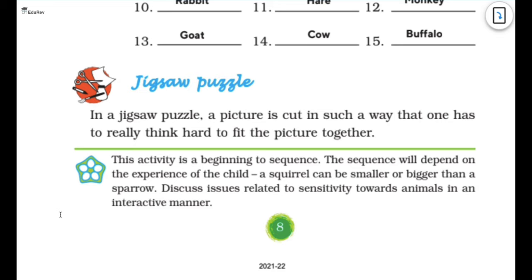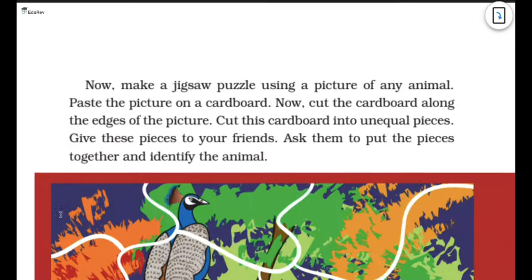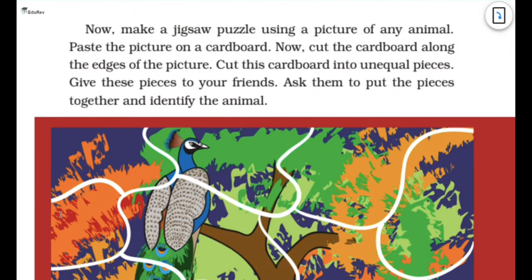And the last is the jigsaw puzzle. In a jigsaw puzzle a picture is cut in such a way that one has to really think hard to fit the pictures together. I hope you people have seen jigsaw puzzle and you have tried jigsaw puzzles at your place. So now you have to make your own jigsaw puzzle. What you need to do is you need to take a paper, you have to draw painting of an animal and then you have to paste that painting on a cardboard. And after pasting that on the cardboard you have to cut the random pieces and make a puzzle. And then you have to give it to your friend and see whether he or she is able to do it or not.